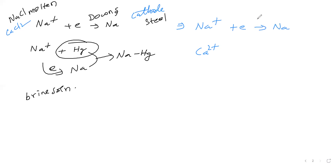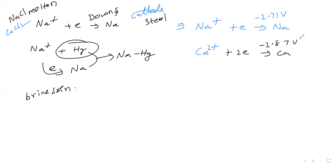For sodium ion to become sodium, the reduction potential is −2.71 V. For calcium ion to become calcium, the reduction potential is −2.87 V. Sodium has the higher reduction potential, so sodium undergoes reduction in preference to calcium. Therefore in Down's process we get sodium at the cathode, not calcium.